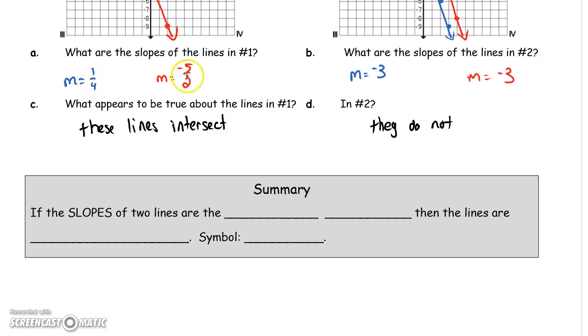What's important to recognize here is also our answers to A and B. Here, my lines intersect. They have different slopes. Here, my lines have the same slope and they're parallel. That's not an accident. That's an actual definition. If the slopes of two lines are the exact same, then the lines are parallel. The symbol we use for parallel is kind of like railroad tracks slanted a little bit. Those are parallel lines. Their slopes have to be identical, though.